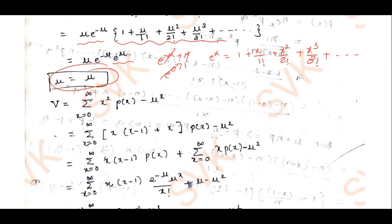Now going for variance. The variance in standard form is given by summation x equal to 0 to infinity of x squared into P(x), minus mu squared. We express x squared as x(x minus 1) plus x. Multiplying by P(x), this becomes summation of x(x minus 1) into P(x), plus summation of x into P(x), minus mu squared. The term summation x into P(x) is the mean mu, giving mu minus mu squared.